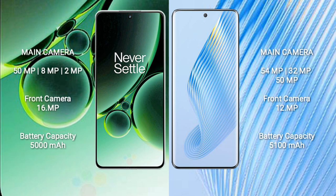OnePlus Nord 3 features a rear triple camera setup: 50MP plus 8MP plus 2MP, and a 16MP front camera. Honor Magic 5 features a rear triple camera setup: 54MP plus 32MP plus 50MP, and a 12MP front camera.